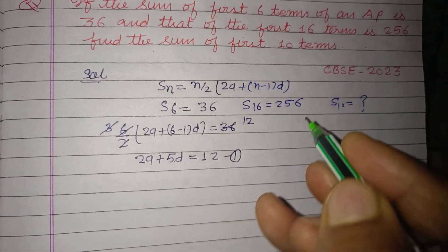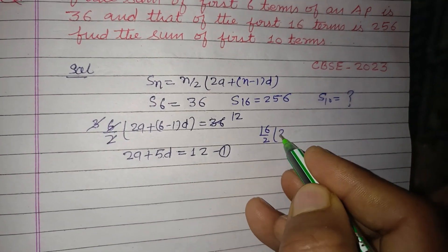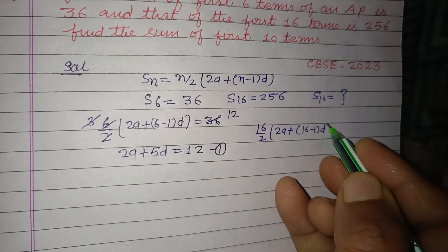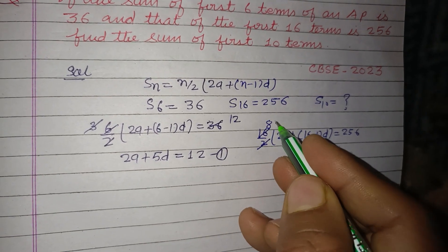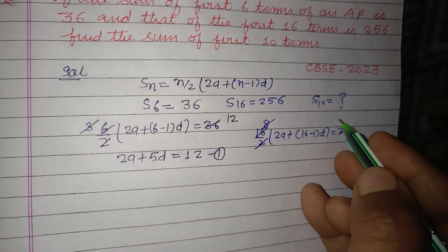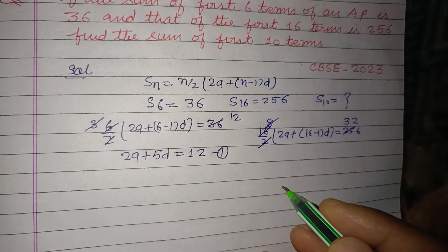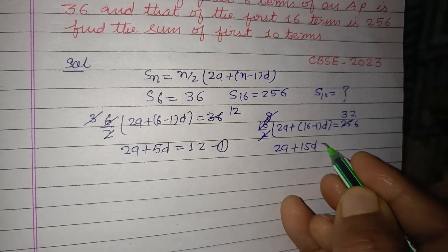This is our first equation. And from here S_16, 16/2(2a + 16-1 into d) equal to 256. Simplifying: 8(2a + 15d) equals 256, so 2a + 15d equal to 32. This is our second equation.